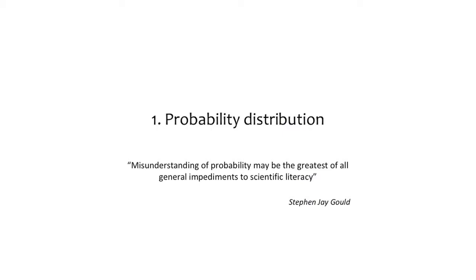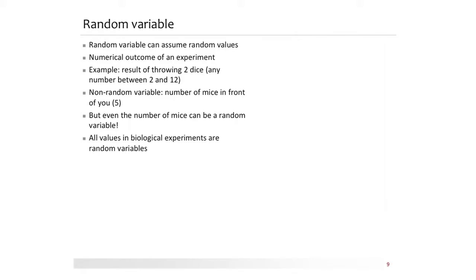Here is a quote from Stephen Jay Gould, a biologist: 'Misunderstanding of probability may be the greatest of all general impediments to scientific literacy.' I am going to improve your understanding of probability. A somewhat tautological definition: a random variable can assume random values. From a practical point of view for biologists, a random variable is the numerical outcome of an experiment — for example, throwing two dice and getting any number between 2 and 12.